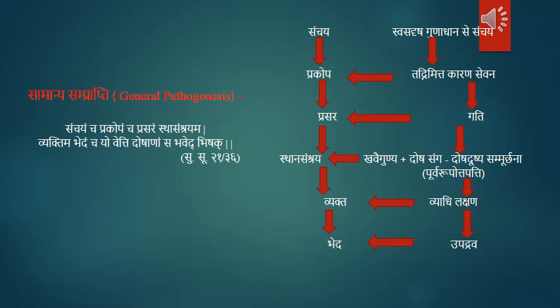Vagbhata adds that there is Viparita Guna Iccha - the body does not like the factor causing accumulation of that particular guna; instead it refers to such diet, habit, or habitat which can normalize the vitiation. This is the general symptom of Sanchaya Avastha. The specific symptoms of Sanchaya are: Kharatva, Doshana, Astabdha Purna Koshtha, Pita Vabhastha, Mandoshma, and Alasya.